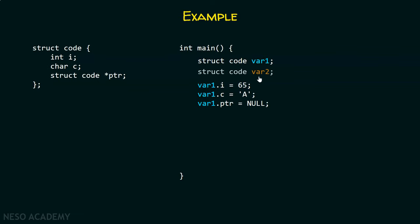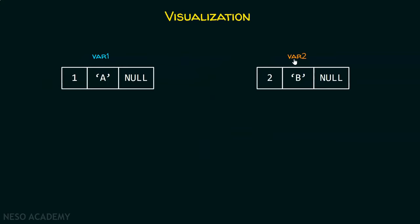Here I have declared another variable of type struct code — var2 — and I am initializing its members with different values. var2 accesses variable i and initializes it with value 66, and the rest of the members are also initialized. Let's assume the base addresses of these two structures are 1000 and 2000 respectively. This is just an assumption — it could be anything.